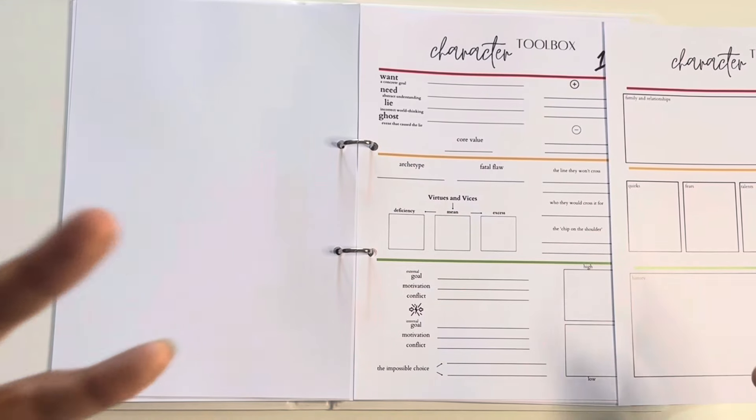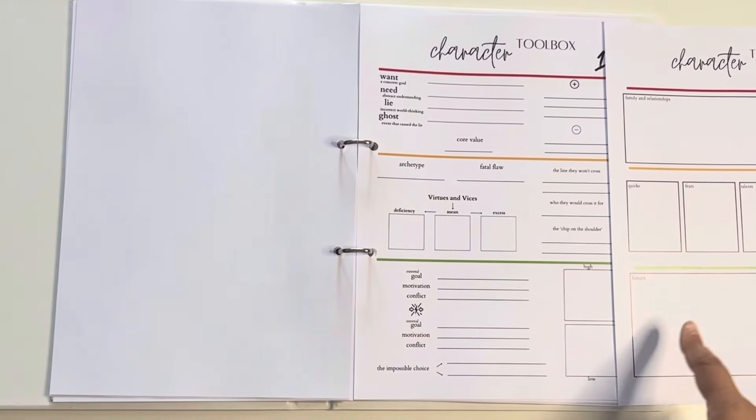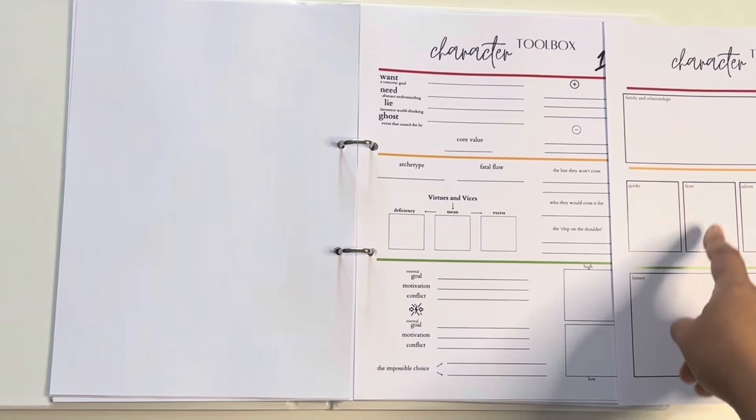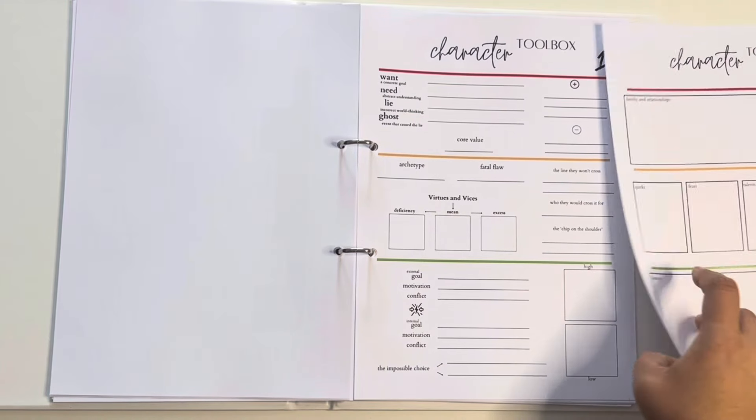And again, if there is anything that pops up in my head while I'm writing about their history, I can add it there. If there's anything about their quirks or their fears or their talents I happen to think of, I can write it in here so I can keep track of it.